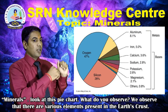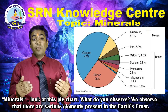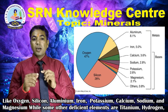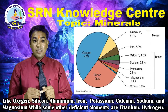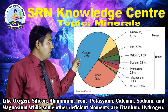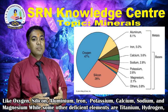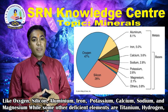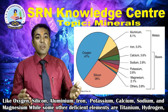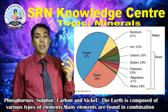Look at this chart. What do you observe? We observe that there are various elements present in the earth's crust like oxygen, silicon, aluminum, iron, potassium, calcium, sodium and magnesium. While some other deficient elements are titanium, hydrogen, phosphorus, sulfur, carbon and nickel.